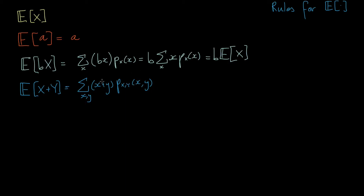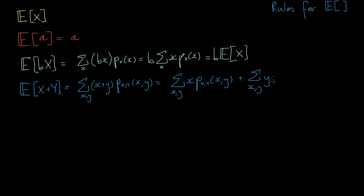Since we have a sum inside the summation notation, we can expand the bracket and split this into two parts. The first part is the sum over all possible values of x and y of x times the joint probability mass function P_xy. The second part is the sum over all possible values of x and y of y times the joint probability mass function P_xy.